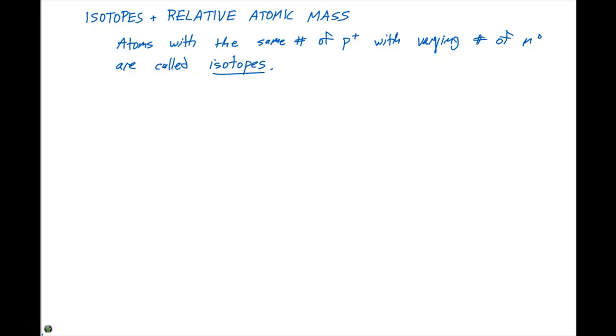If we look at some examples of these isotopes, for example, if we take magnesium, there are three different isotopes which exist. There's magnesium-24 which has 12 protons, 24 minus 12 or 12 neutrons, and since it's neutral it will have 12 electrons.